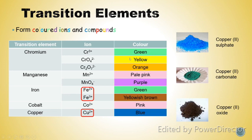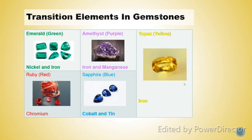That's why we say transition elements can form colored ions and compounds. Transition elements also play an important role in gemstones. For example, emerald, amethyst, topaz, ruby, and sapphire. Ruby and sapphire are very beautiful because of the transition elements present in them.